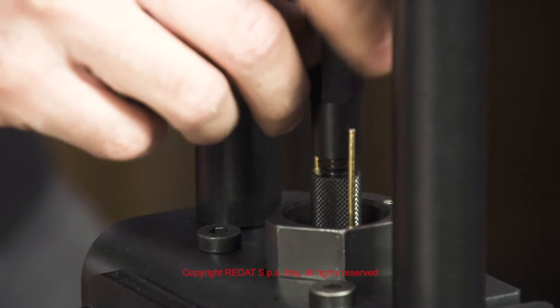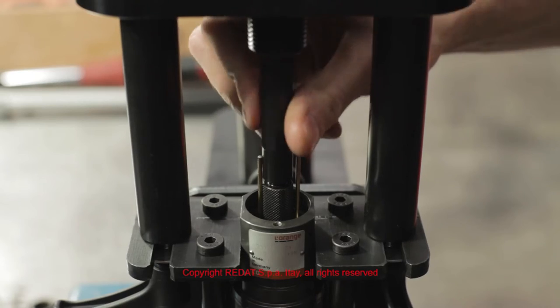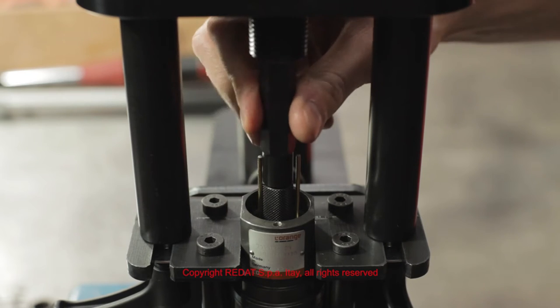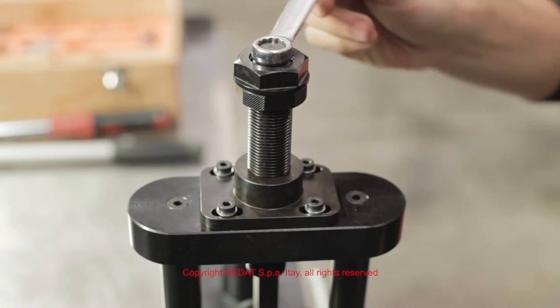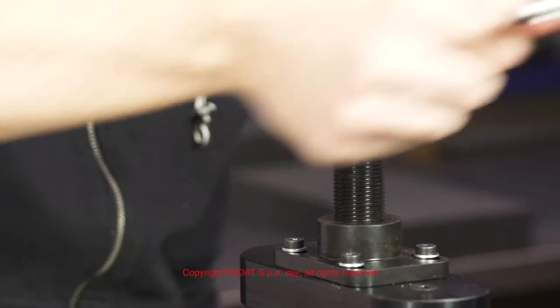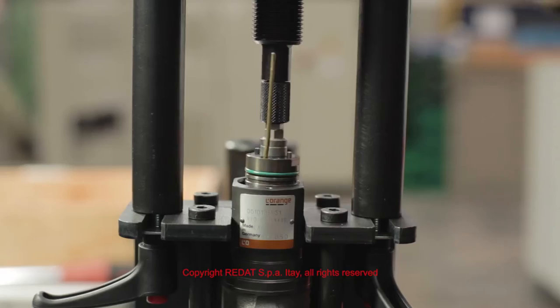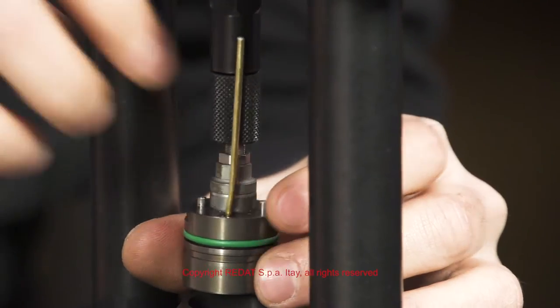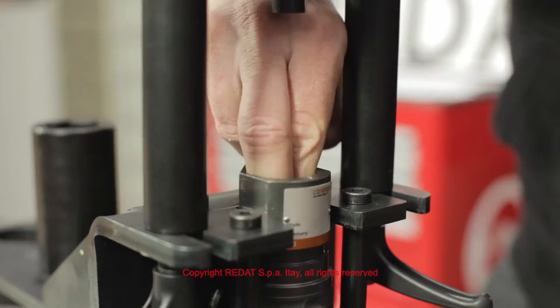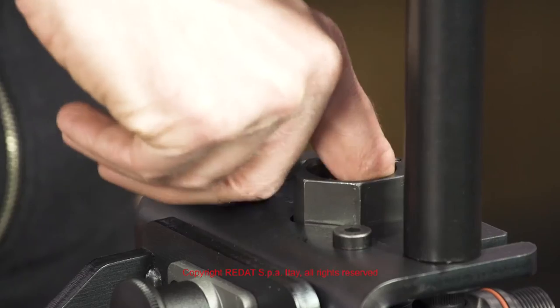We lower the extraction pin on the reducer screwing the two parts together. At this point it is possible to proceed with the extraction of the solenoid assembly using the 14 wrench. We also remove the other moving components.